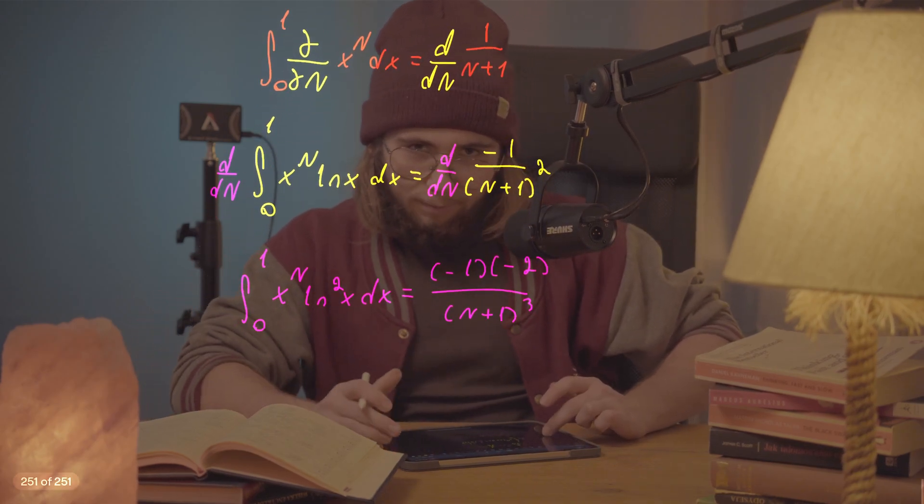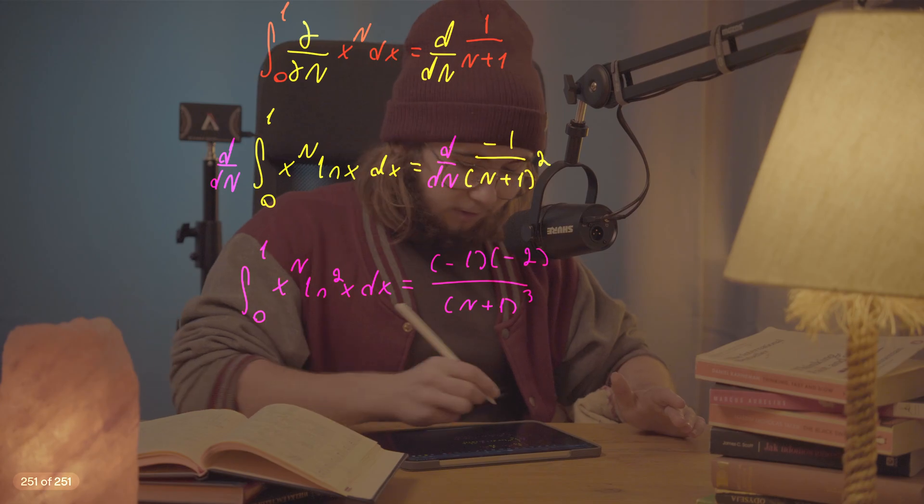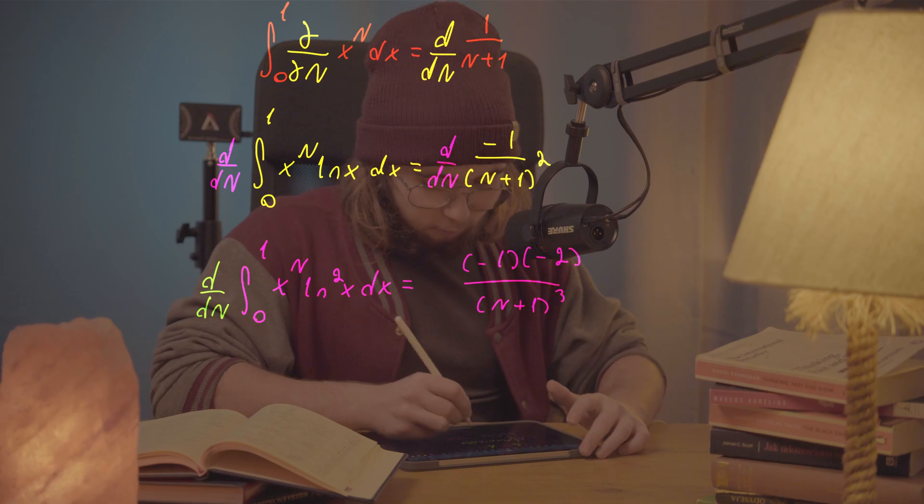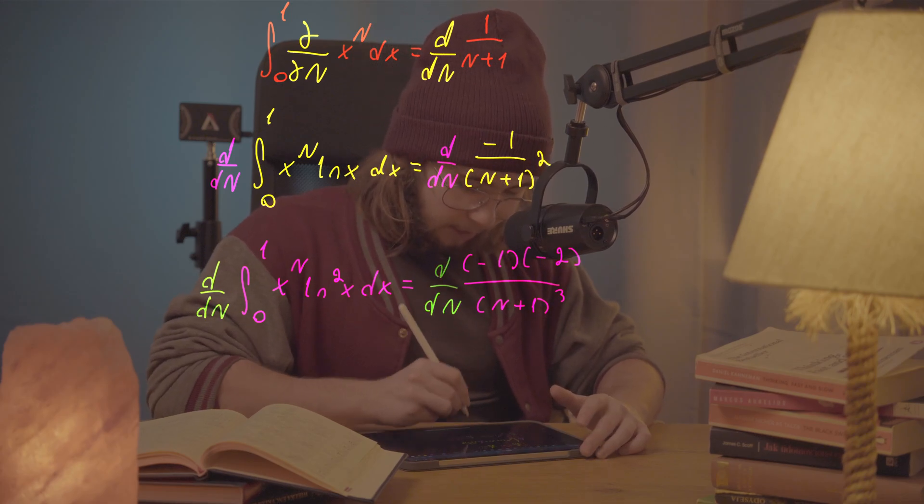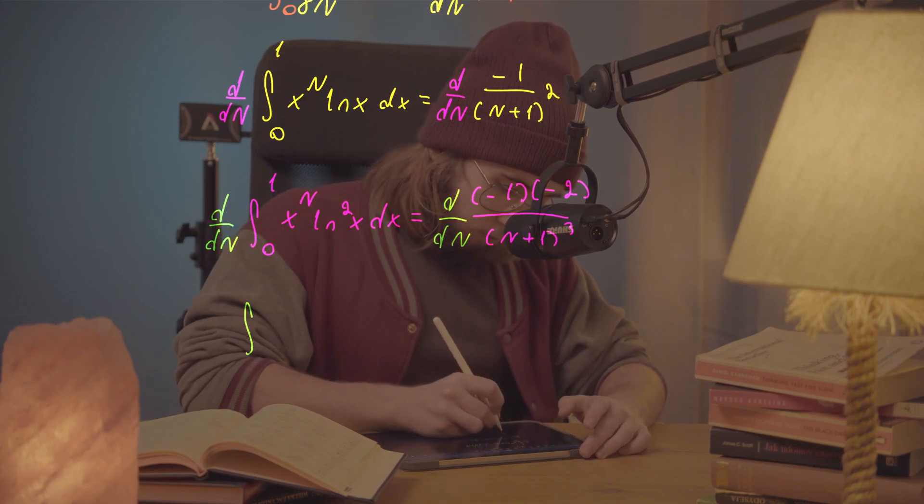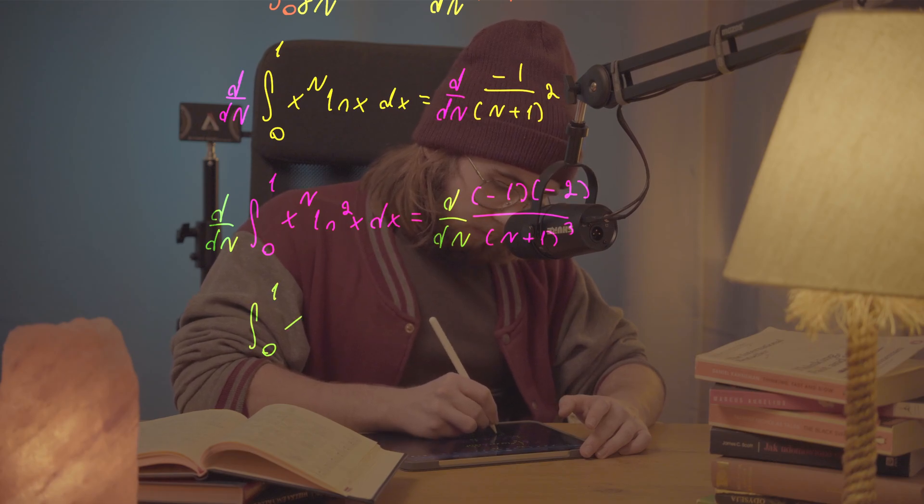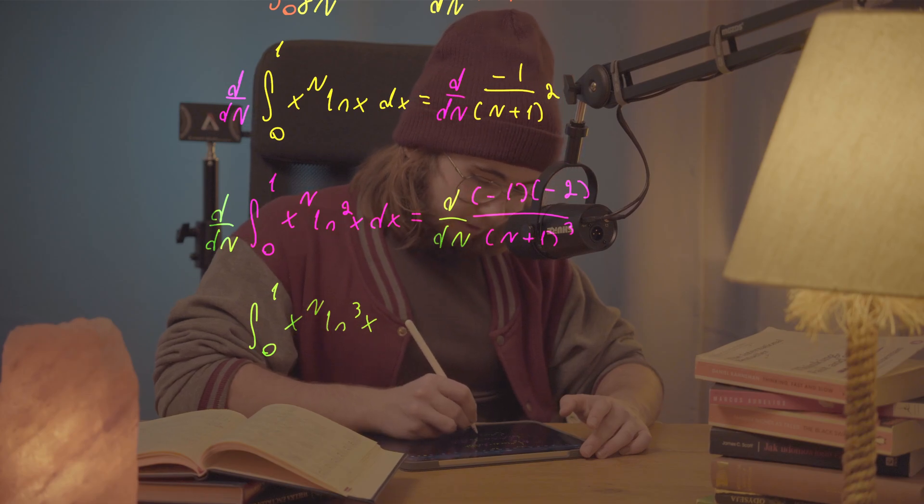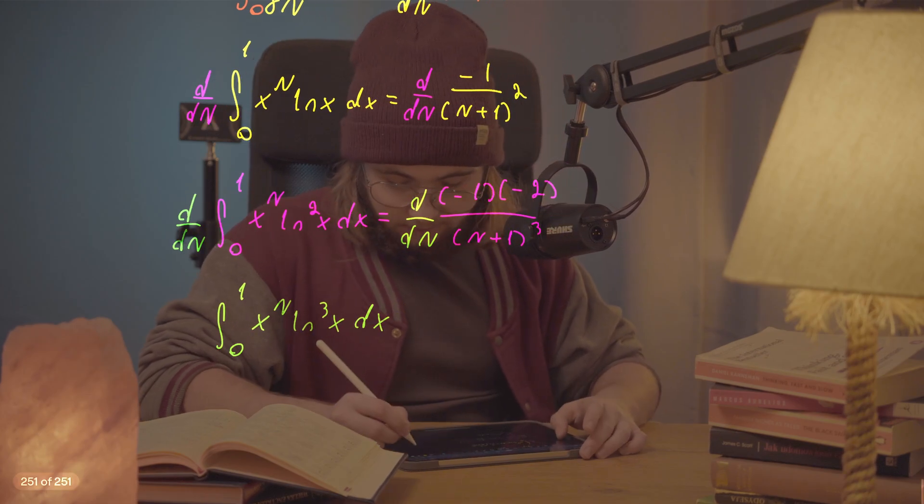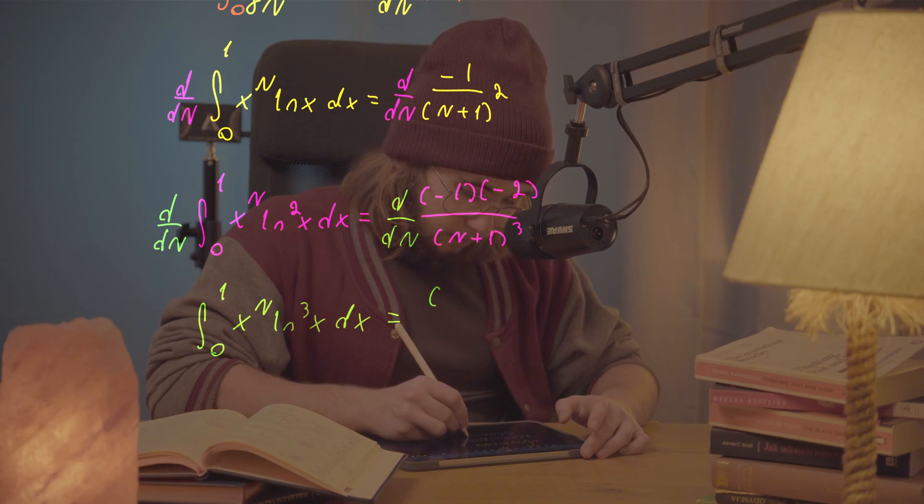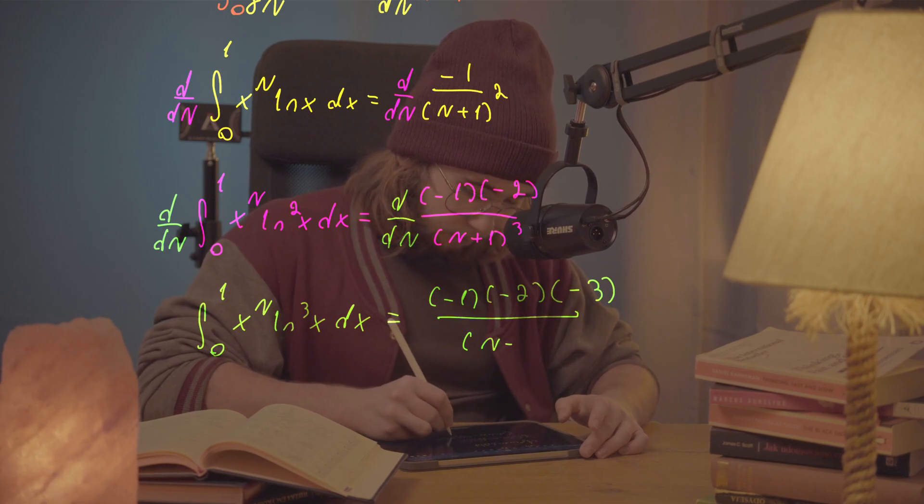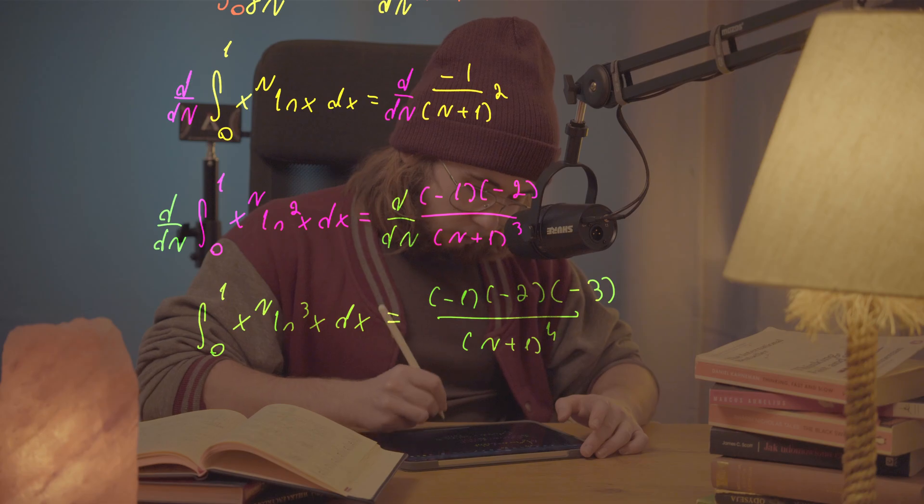Let me do it one more time so you guys for sure see the trick here. I would like to once again take the derivative of both sides with respect to capital N, and I'm going to get this integral from 0 to 1 of x to the power of capital N times ln cubed of x dx, and it's going to be equal to negative 1 times negative 2 times negative 3, all divided by capital N plus 1 to the power of 4.